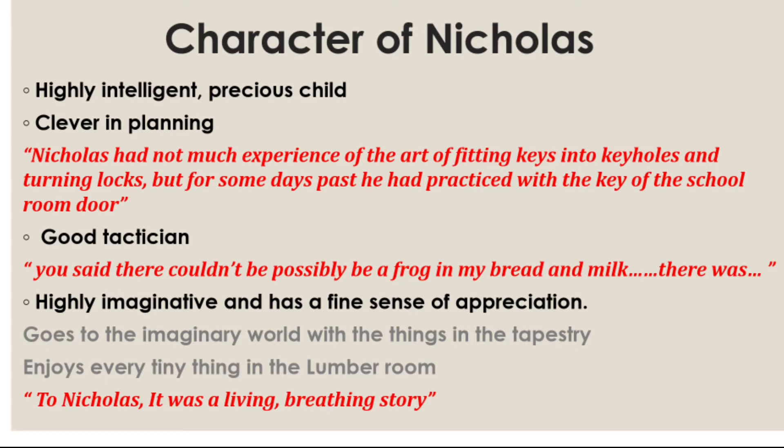Nicola is also a good tactician — he has a lot of strategies to trick others, which is one aspect of his childish nature. The quoted line is: 'You said there couldn't possibly be a frog in my bread and milk, but there was a frog there.' He refuses to eat it. Also, when the aunt is stuck in the rain water tank and asks him to fetch the ladder, he asks for strawberry jam for tea — he has strategic ways to trick others.